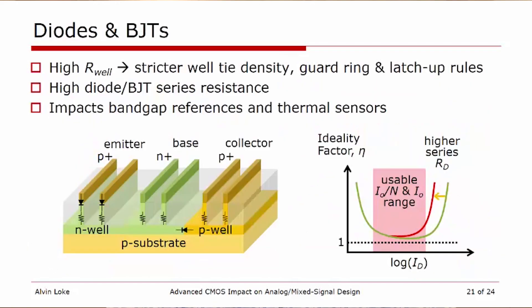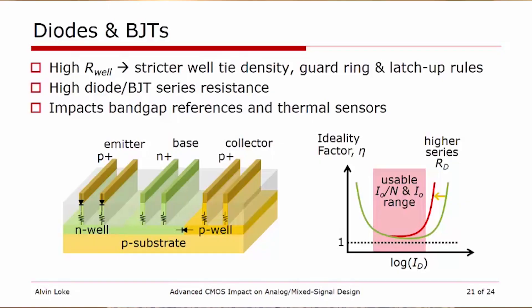Moving to diodes and bipolars: as mentioned earlier, higher well access resistance has resulted in stricter well-tied density, guard ring, and latch-up rules. The higher diode or BJT series resistance essentially reduces the window of current where you can bias your bandgap reference and thermal sensors.